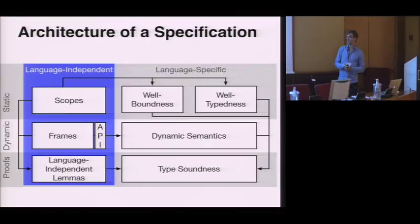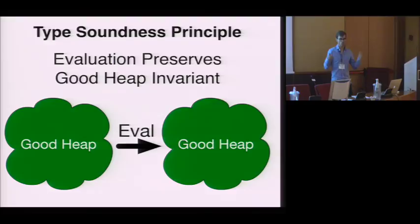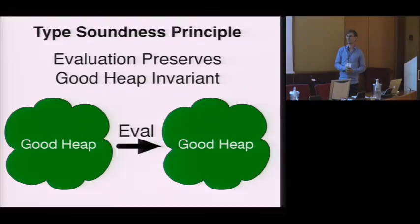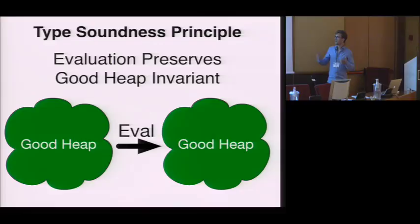How do we actually prove type soundness? The key property becomes ensuring that the good heap invariant is preserved during evaluation. If we start evaluation in a good heap, evaluation should preserve the good heap property, providing a guarantee that we can dereference variables and yield something well-typed. This property largely follows from language-independent lemmas, which is a really nice property.